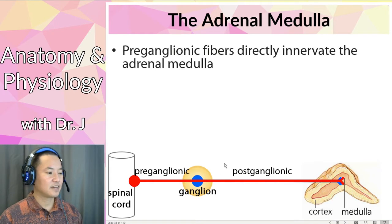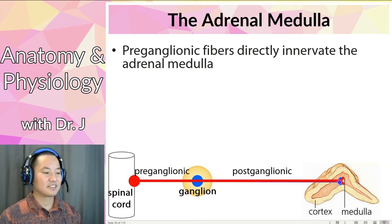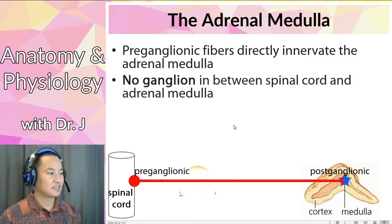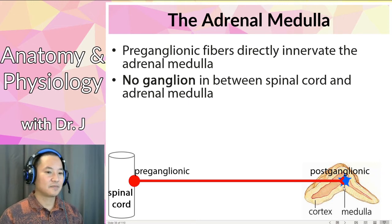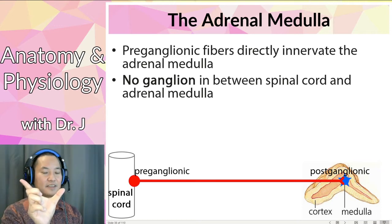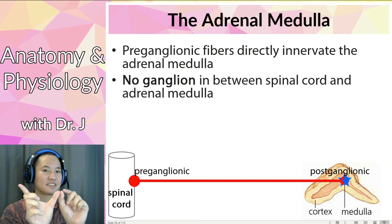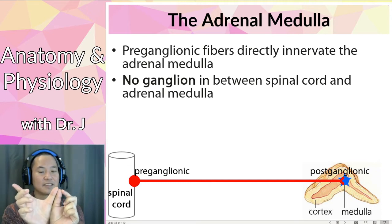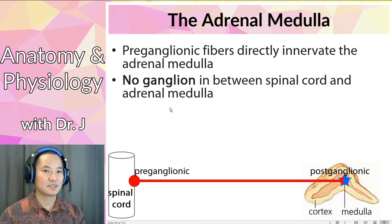With the adrenal medulla, the preganglionic fiber actually runs all the way to the adrenal medulla — it's very long, going directly to the center of the adrenal gland. There is no ganglion between the spinal cord and the adrenal medulla. Because the preganglionic is so long, this takes away the length from the postganglionic cell. It used to be a typical sympathetic pattern of short preganglionic and long postganglionic, but here the postganglionic gets very small — in fact, it's a specialized cell.